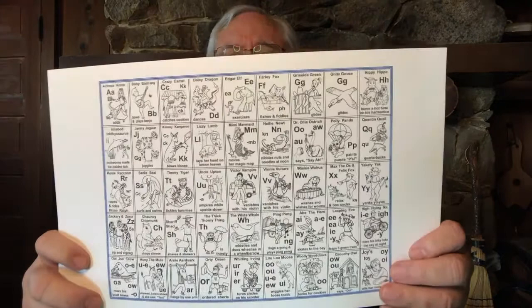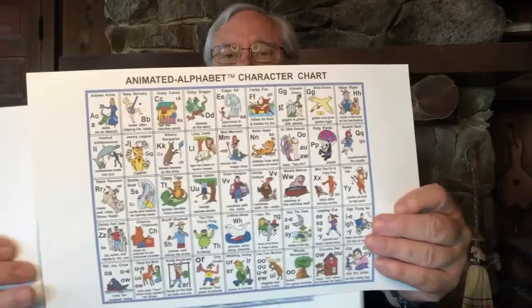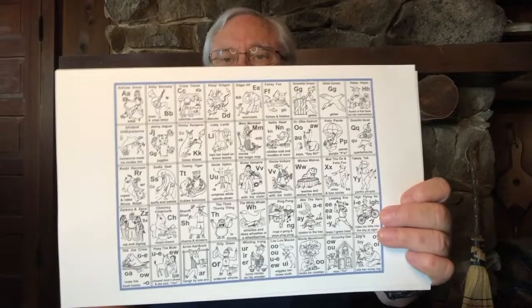Before starting the program, I suggest putting up all of the characters in black and white, as you see on this chart. You can use a chart, half-size picture cards, or full-size picture cards, depending on how much wall space you have. Then as you introduce each character's complete story and song, you change the black and white picture to a color picture. Gradually, all those black and white pictures will come into color.